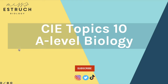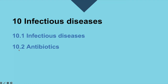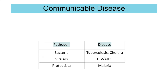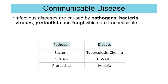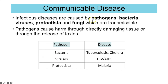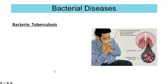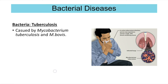In the infectious diseases topic, you need to know that bacteria, viruses, protoctista and fungi are able to cause infectious diseases, but you focus on three in particular for your exam board. Pathogens can cause harm through directly damaging tissue or through the release of toxins. The three diseases you need to know are tuberculosis and cholera for bacteria, HIV which can develop into AIDS, and malaria as a protoctista disease.